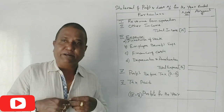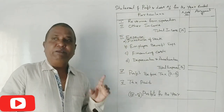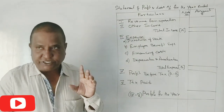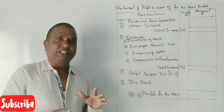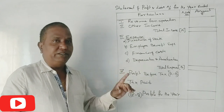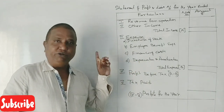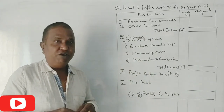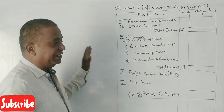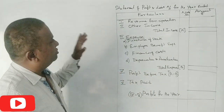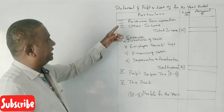Who are the Financial Statements? Financial Statements are the Statement of Profit and Loss and the Balance Sheet. The first thing is the Statement of Profit and Loss and the Balance Sheet.